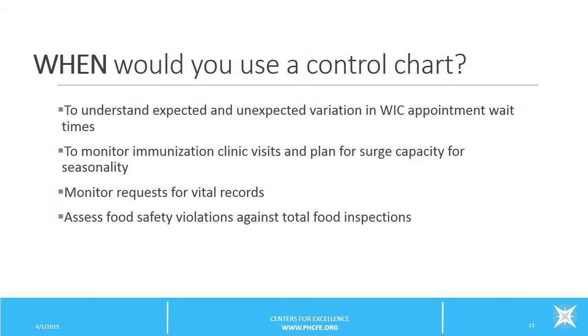So when would you use a control chart? There's many different examples for public health practice that we may apply a control chart to. For instance, we might use a control chart to understand expected and unexpected variation in WIC appointment wait times. We can use these charts to monitor immunization clinic visits and plan for surge capacity for seasonality in immunizations. We can use a control chart to monitor requests for vital records or assess food safety violations against total food inspections.